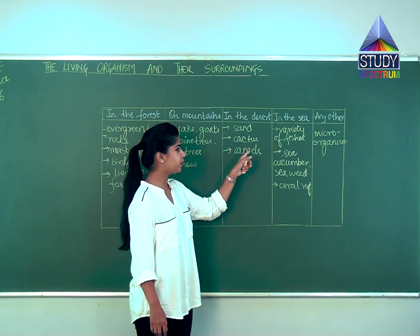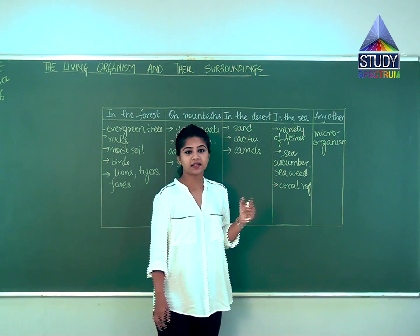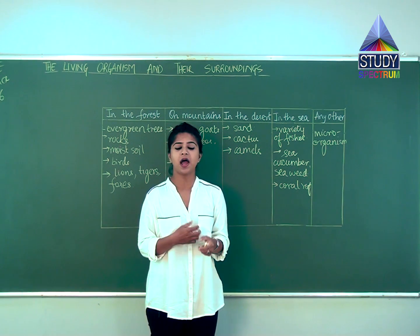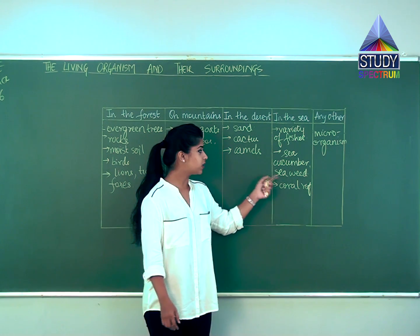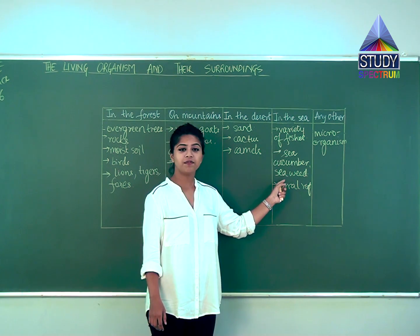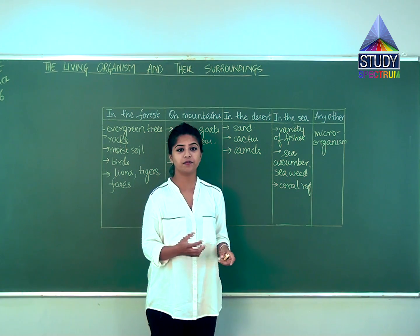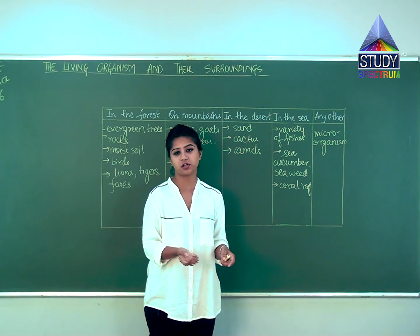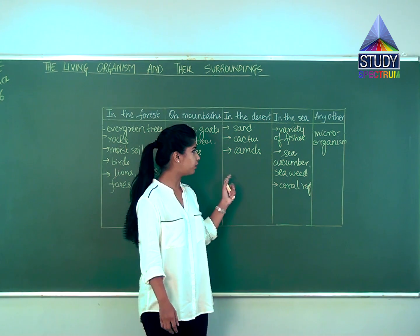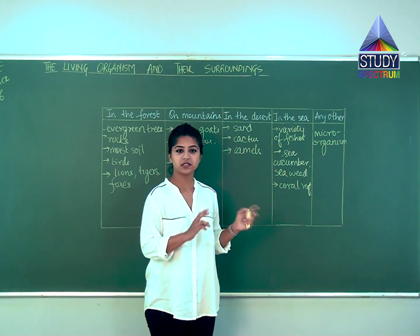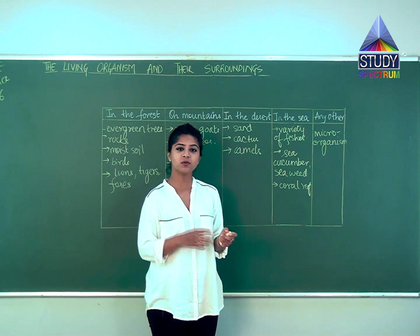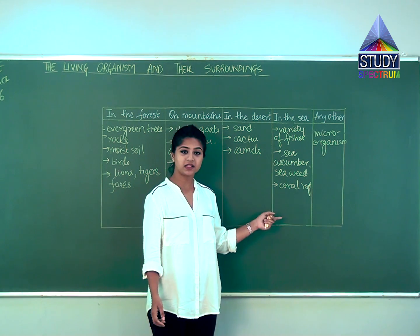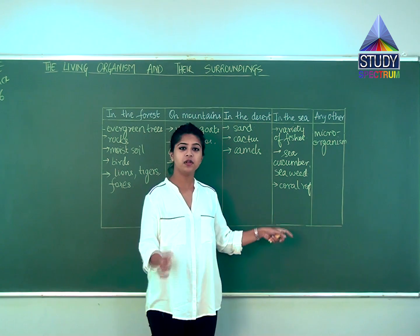In desert plants we found cactus - a thorny structure, very short, small, and fleshy. But the plants found in sea are seaweed and sea cucumber, which are very floaty structures that are very thin - nothing like cactus. This difference is basically to understand the survival of these living organisms in two different types of surroundings.